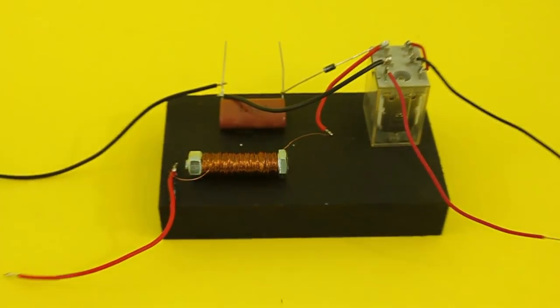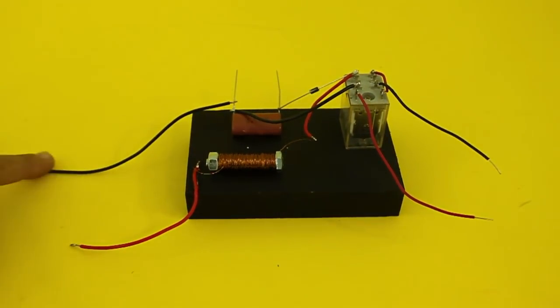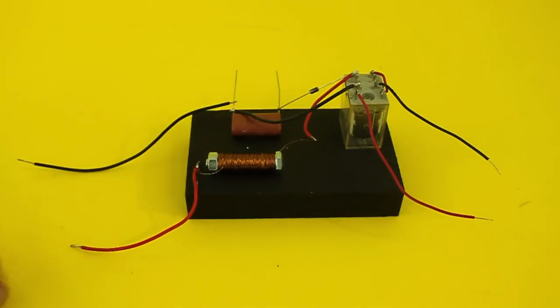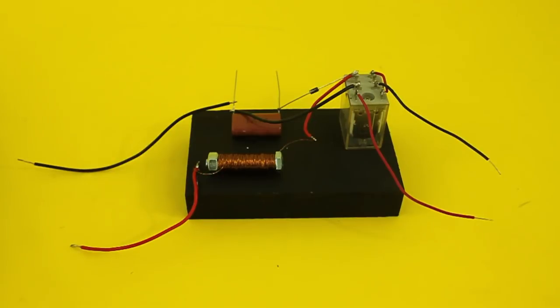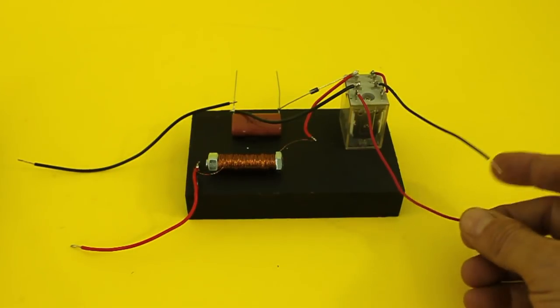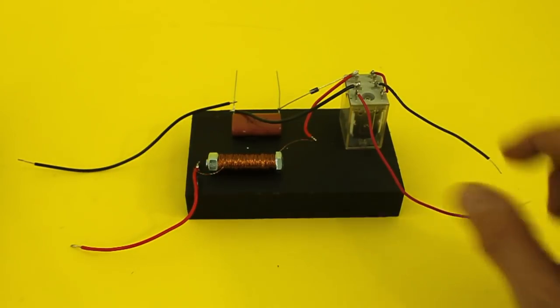And for the connections, here we apply the input voltage and the output voltage will be obtained at the capacitor's terminals. These two wires are for power to the relay.